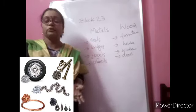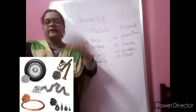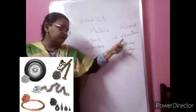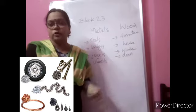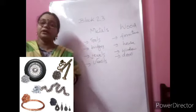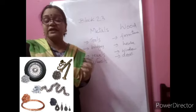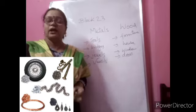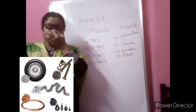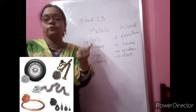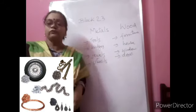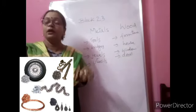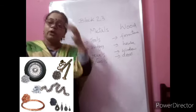Utensils are made of metal because they can pass heat properly so food gets cooked. Wood is used for furniture, houses, windows, and doors because wood is light and can be given different shapes — beautiful carvings can be made. Wood can also be used as fuel to cook food. When you know the properties, you can easily explain why materials are used for different purposes.